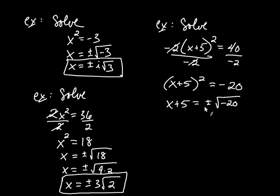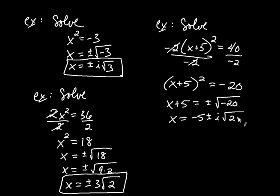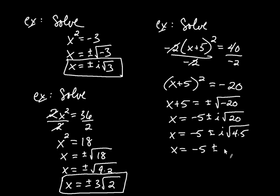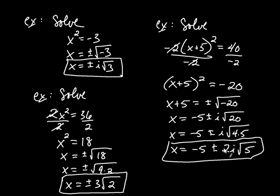Two things have to happen: we have a negative under the square root, which gives rise to i, and we also need to isolate x by subtracting 5 from both sides. So x equals negative 5 plus or minus i times square root of 20. The square root of 20 simplifies: it's i times square root of 4 times 5, and the square root of 4 is 2. So x equals negative 5 plus or minus 2i root 5. The two solutions are negative 5 plus 2i root 5, and negative 5 minus 2i root 5.